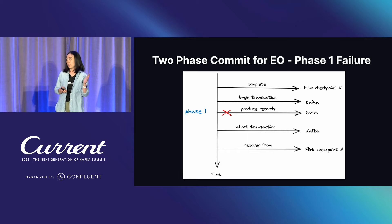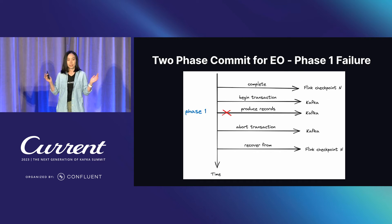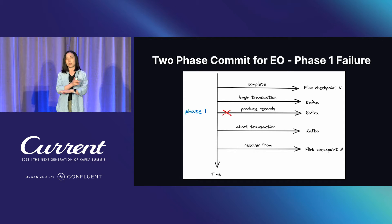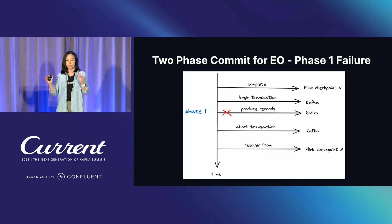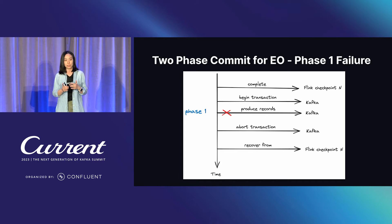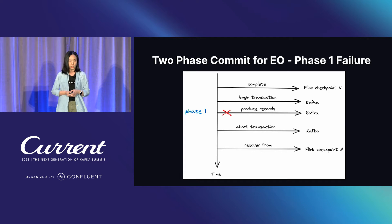Let's look at the failure mode. In phase one, if any failure happens — say, in the middle of writing records to Kafka, something bad happens on either the Flink side or Kafka side — when that recovers, the Flink producer will just abort the transaction, so nothing is actually committed to Kafka yet. Flink will recover from the last successful checkpoint and everything runs again.